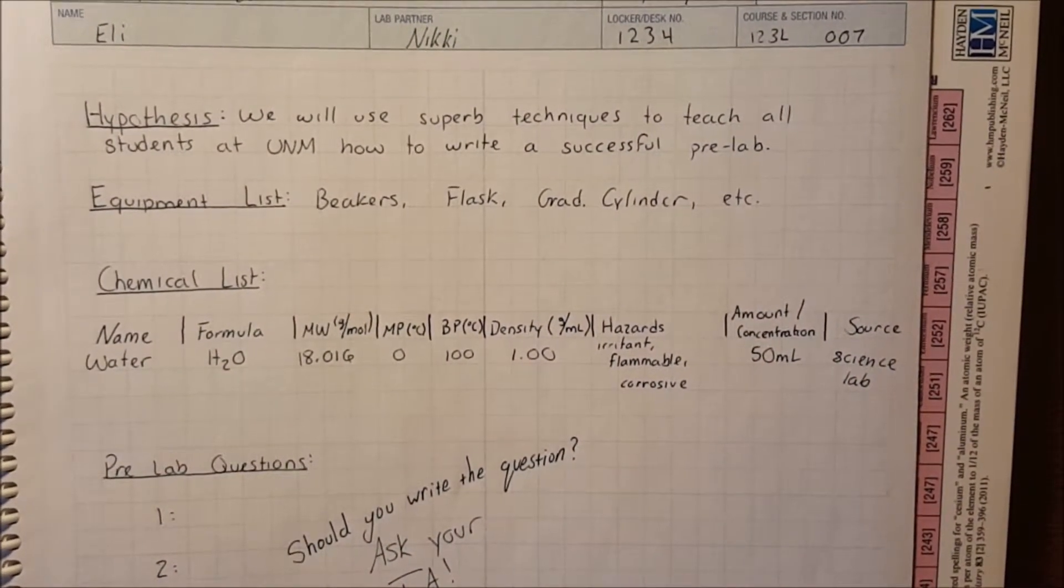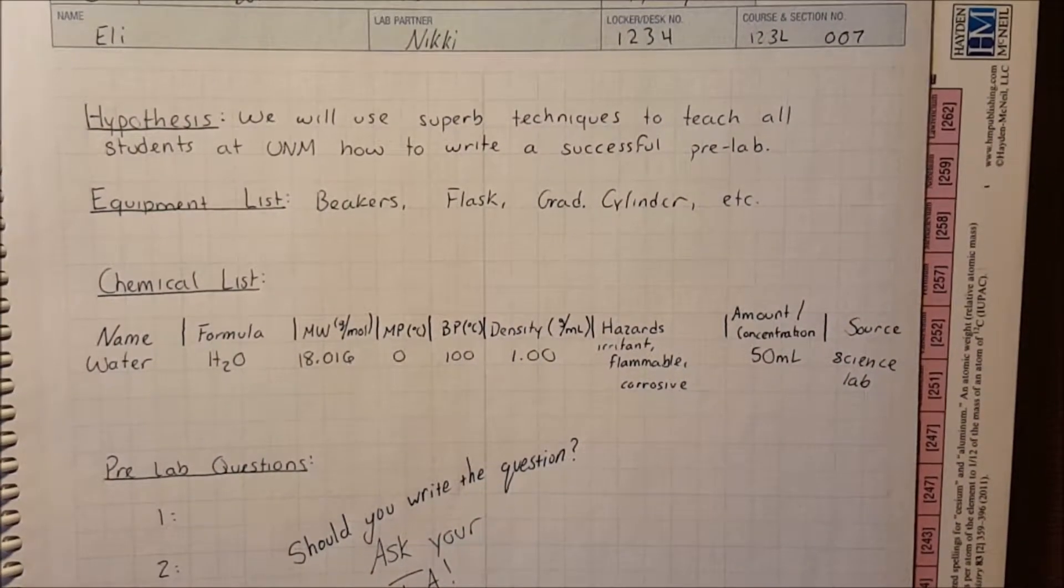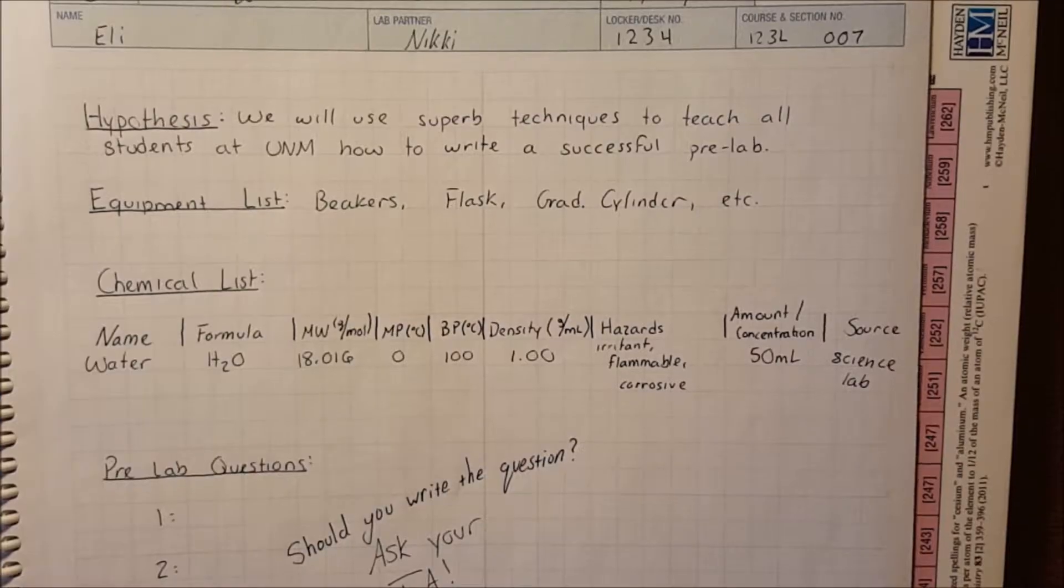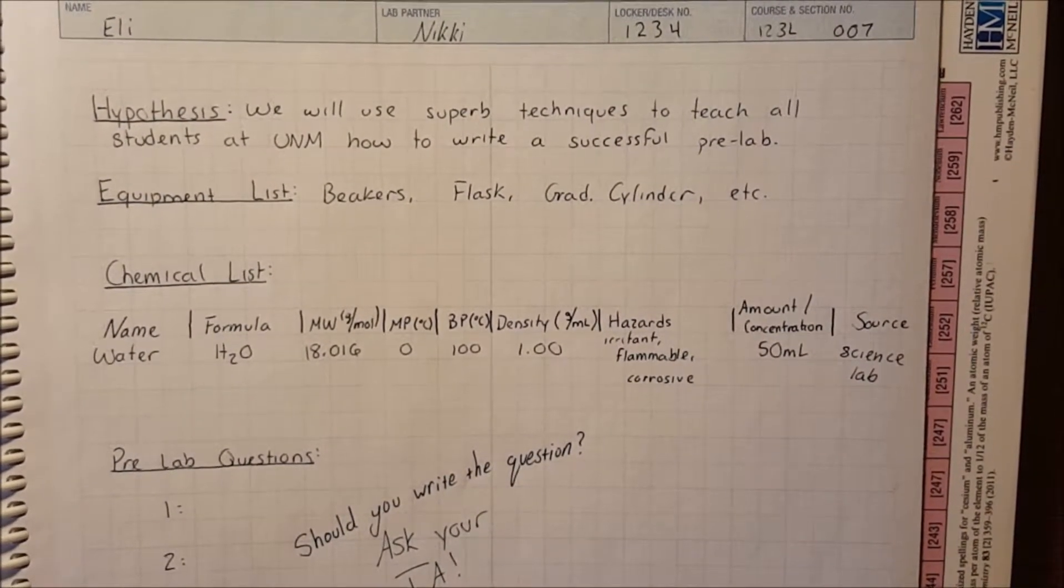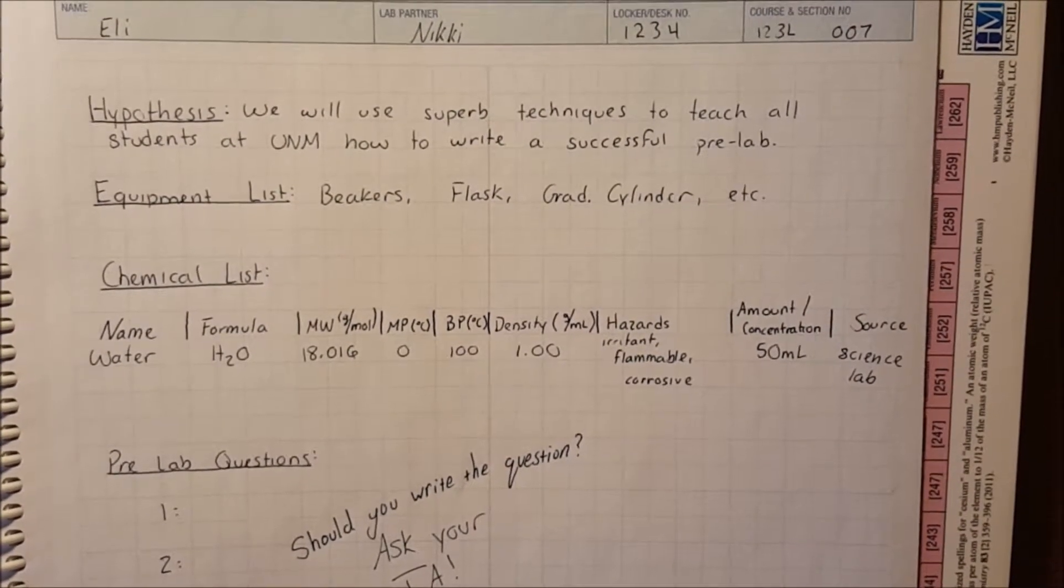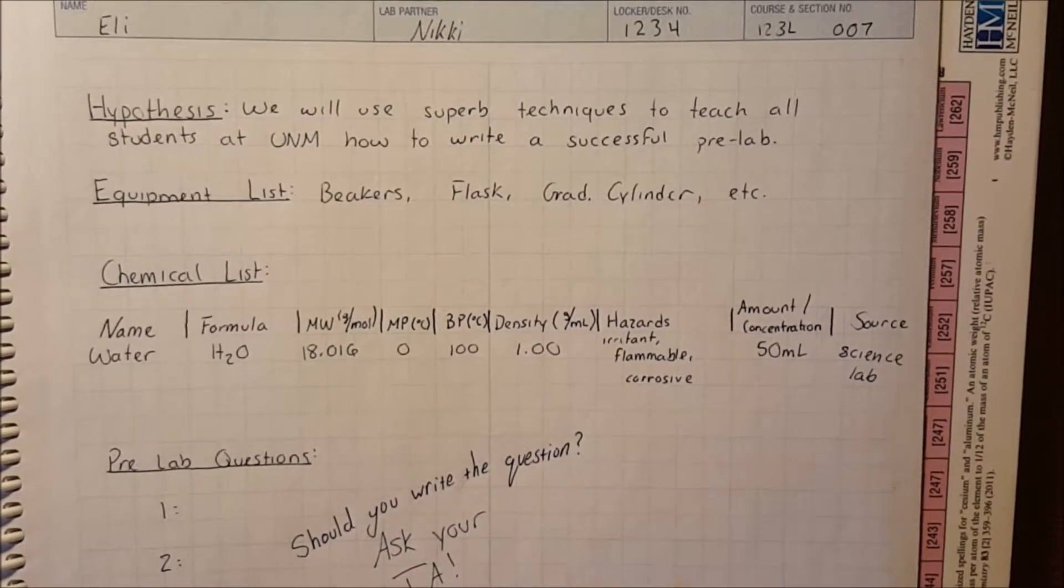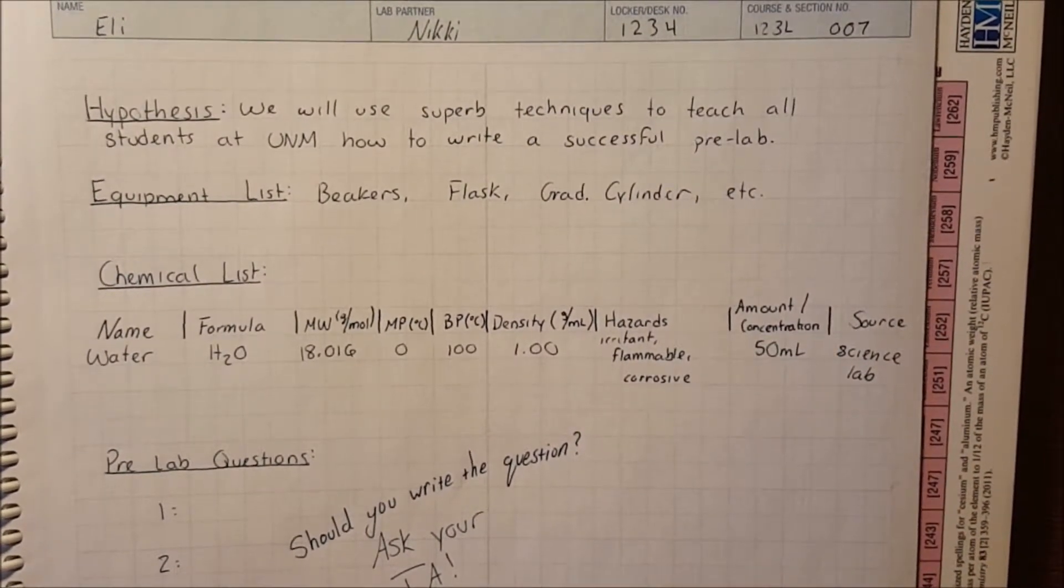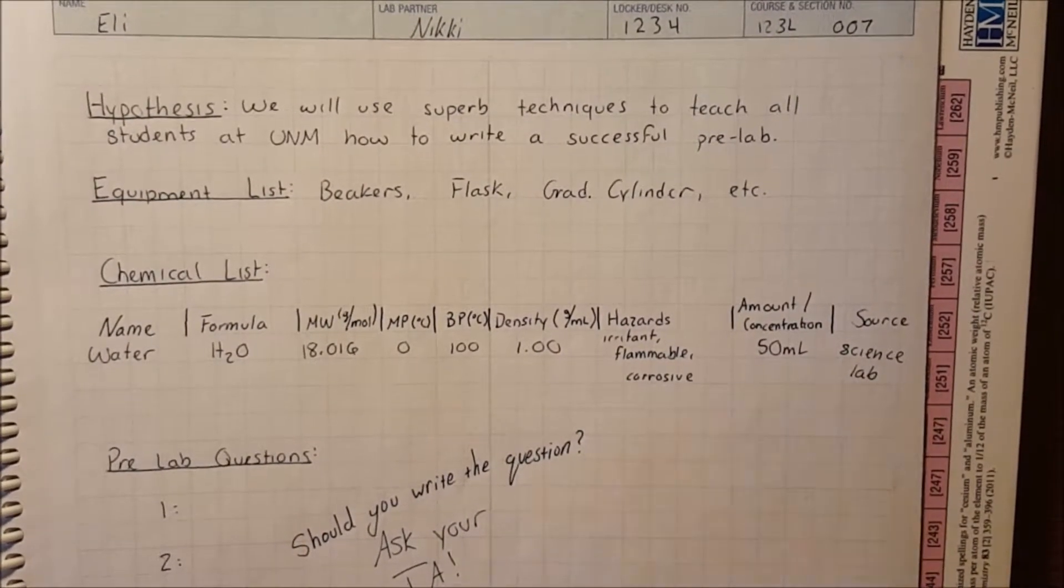You'll make a table as shown here. The headings go as follows: the name of the compound you're using, the chemical formula, the molecular weight in grams per mole, melting point and boiling point in degrees Celsius or any other unit, density in grams per milliliter, and hazards, which is a large section usually, so leave yourself as much space as possible.